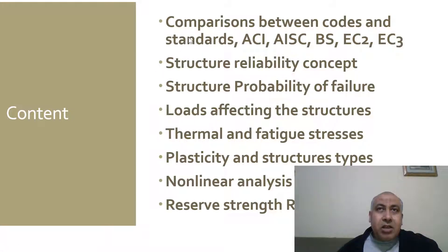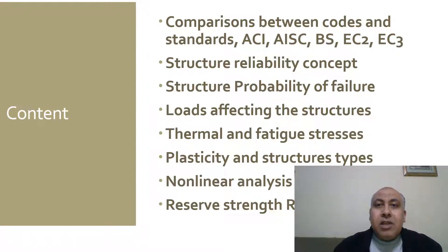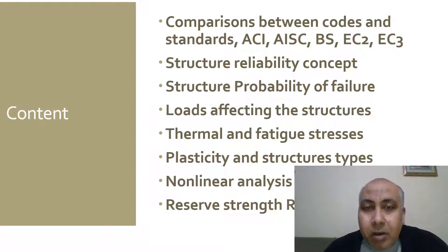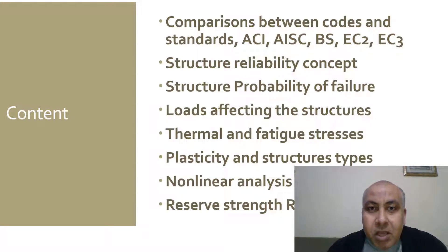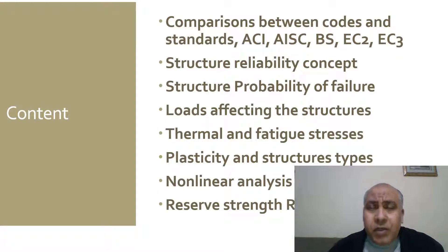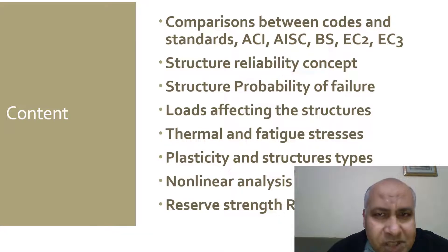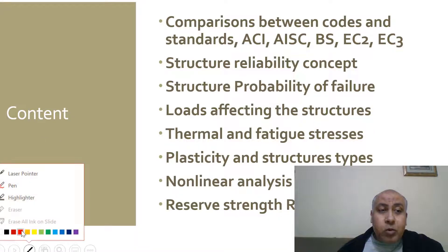The course content begins with discussing a common conflict among engineering firms — conflicts between designers, consultants, contractors, and owners — because the underlying concept gets lost. For example, in university we study deterministic methods: load resistance factor design with 1.4 times dead load and 1.6 times live load, and in the American code there is a reduction factor for strength, or gamma partial safety factor for steel and concrete in European or British standards.